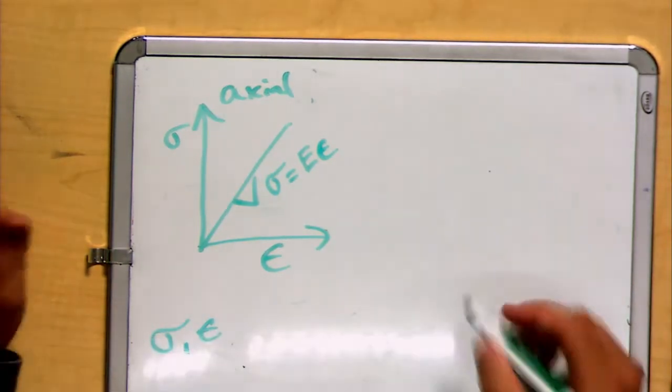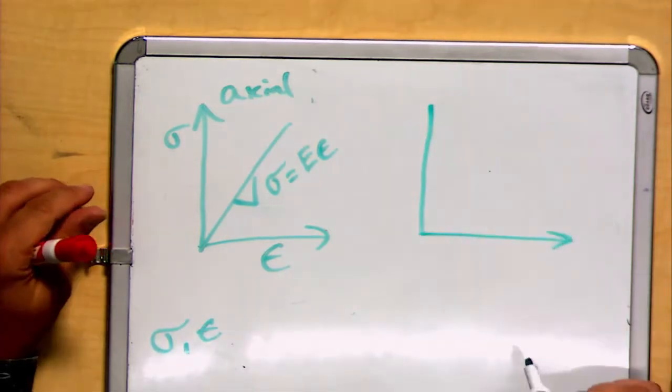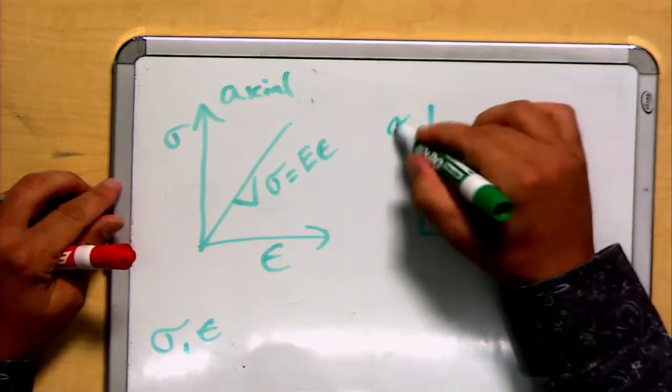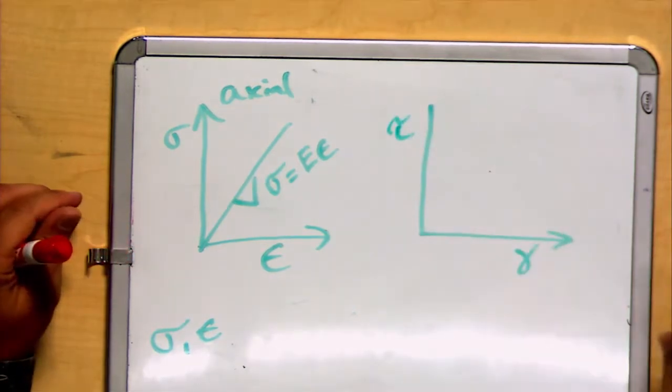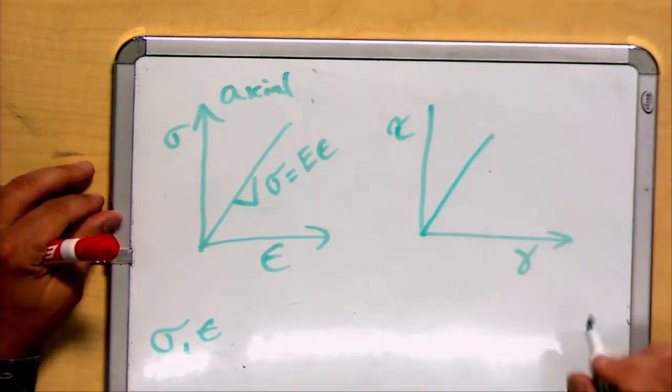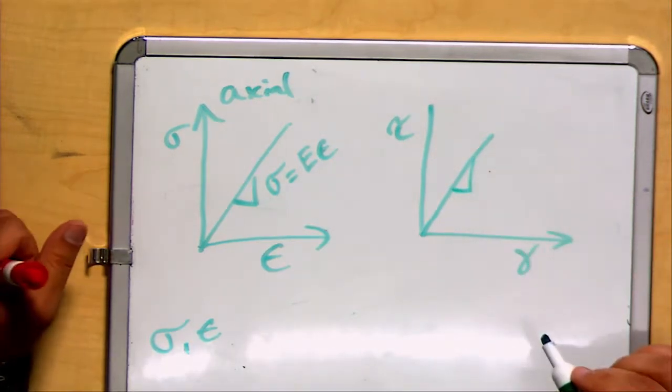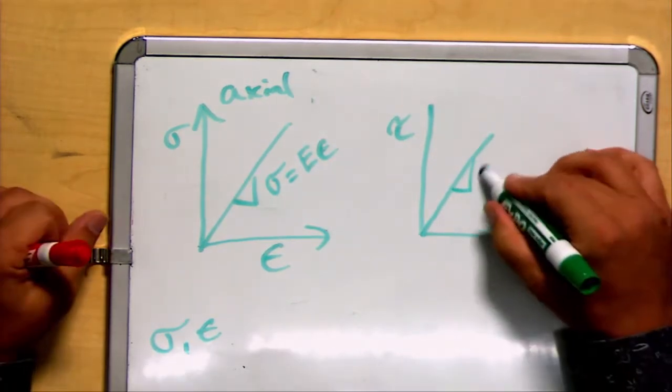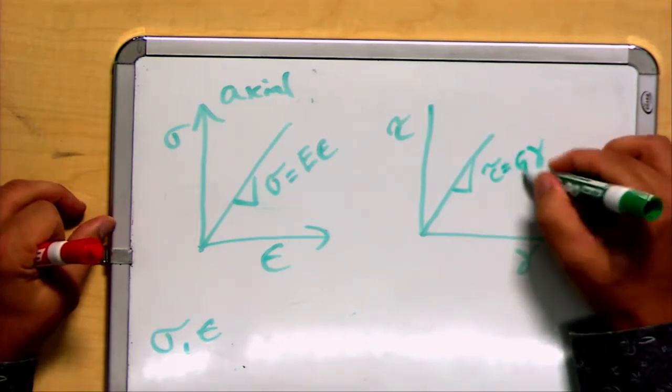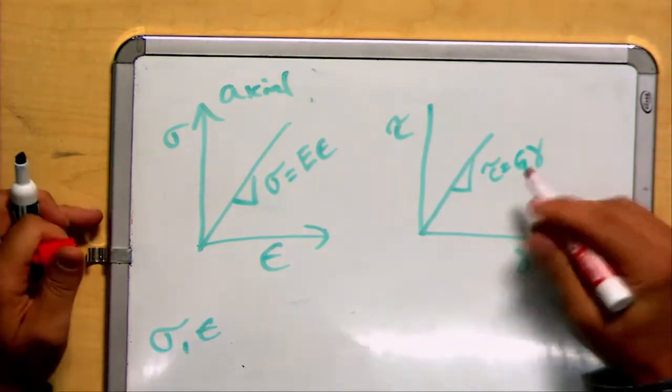We can consider a similar set of circumstances for shear. If we plot shear strain versus shear stress, we generally will also see the same type of linear behavior, although the slope of that relationship will be a different value. That value is represented with the letter G and is called the shear modulus.